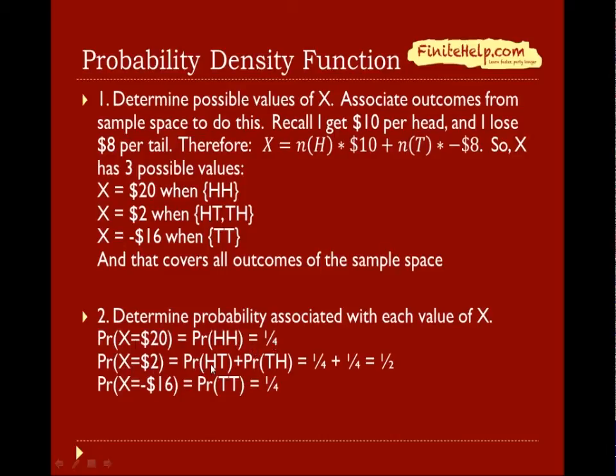The probability of X equals 2 is Pr(HT) + Pr(TH), because both outcomes are assigned the value of 2. So Pr(X=$2) = 1/4 + 1/4 = 1/2.